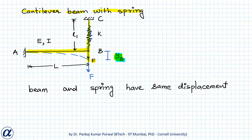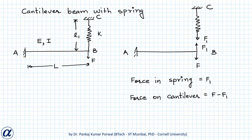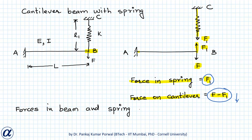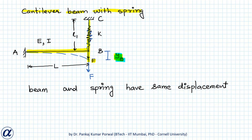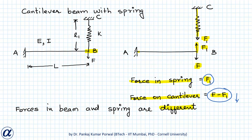Drawing the free body diagram of joint B, force F acts downward and the spring force f1 acts upward on the beam. So the force in the spring is f1, while the force at end B of the cantilever is F minus f1 downward. The force in the spring and the force on the cantilever are different. Since they have the same displacement and different forces, the cantilever beam and spring are connected in parallel.